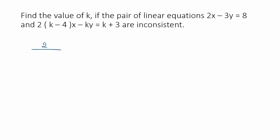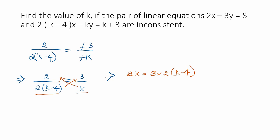2 divided by 2k minus 4 equals minus 3 by minus k which is same as 2 divided by 2 times whole of k minus 4 equals 3 by k. k in numerator, k minus 4 in numerator.